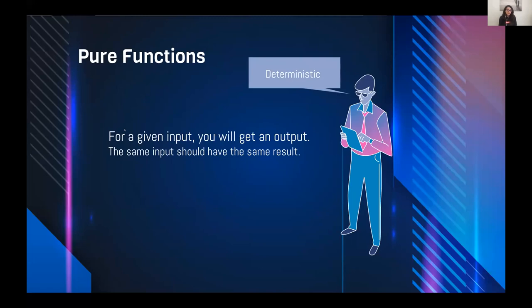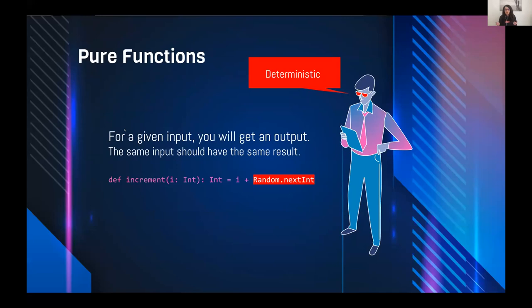A pure function should also be deterministic: when called with the same input, it should always return the same result. For example, an 'increment' function that is not deterministic — whenever we call it even with the same input, we get different values. We don't know what's happening inside and we cannot test it.